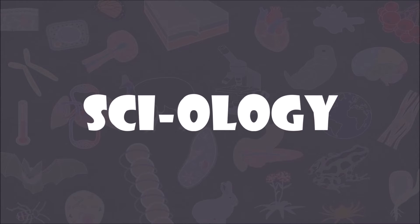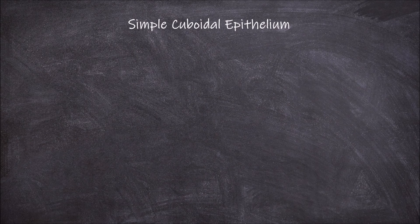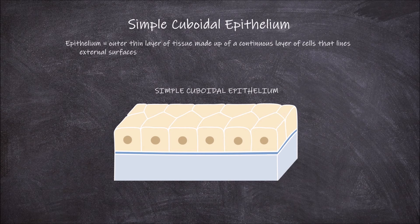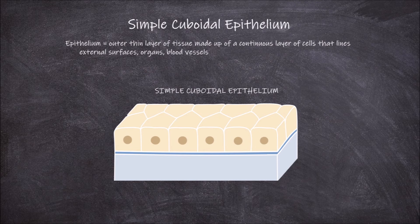Welcome back to my channel. In this video we are going to go over what simple cuboidal epithelium is. The epithelium is the outer thin layer of tissue made up of a continuous layer of cells that lines the external surfaces of the body. It also lines the organs and blood vessels as well as the internal surfaces of the hollow organs within the body.